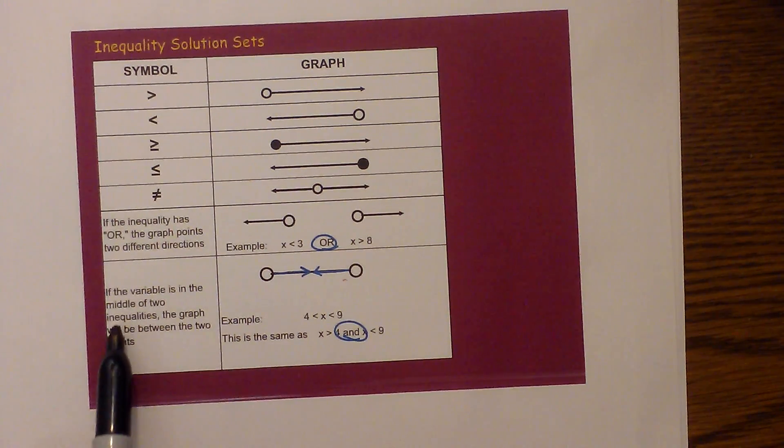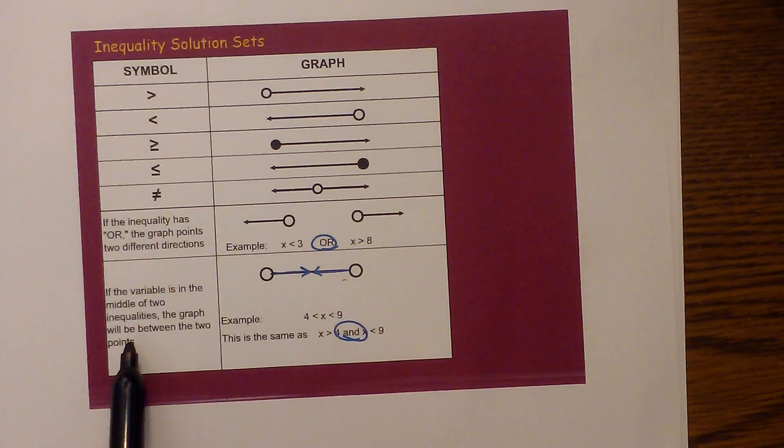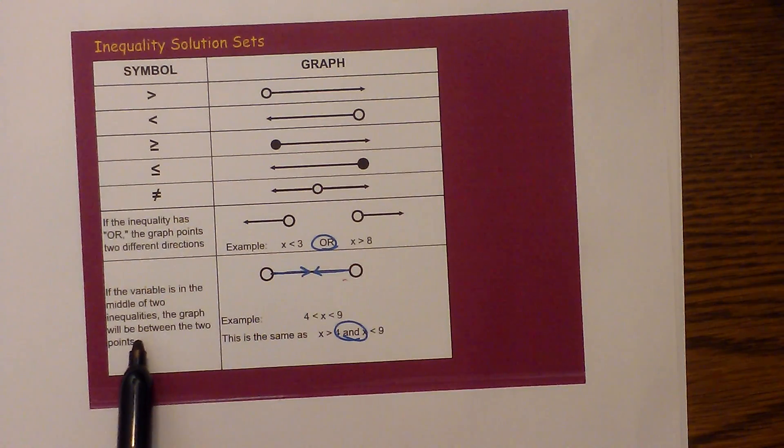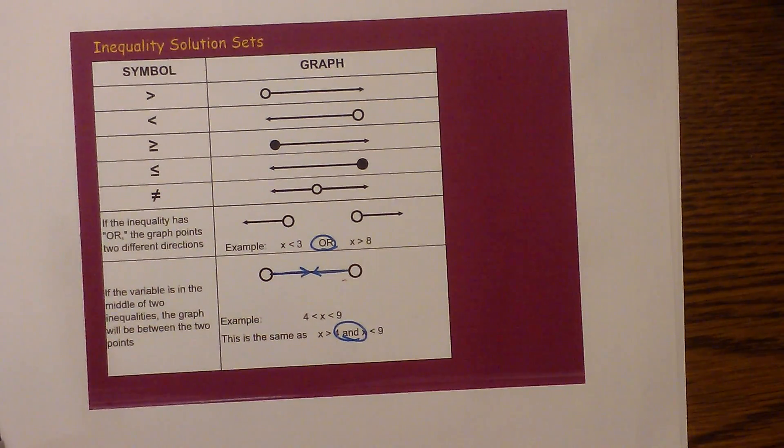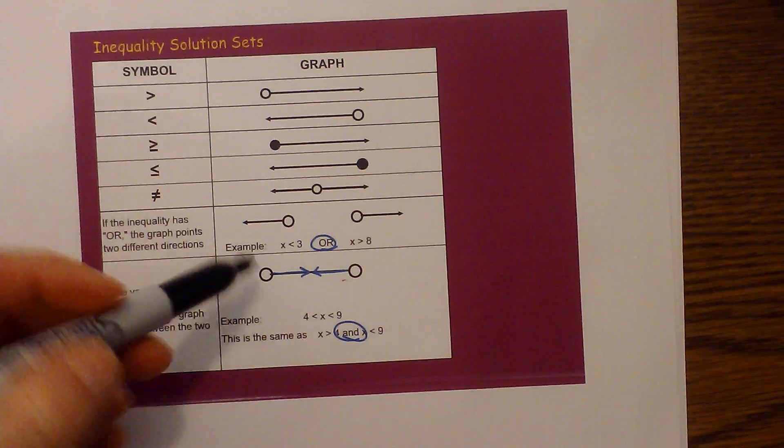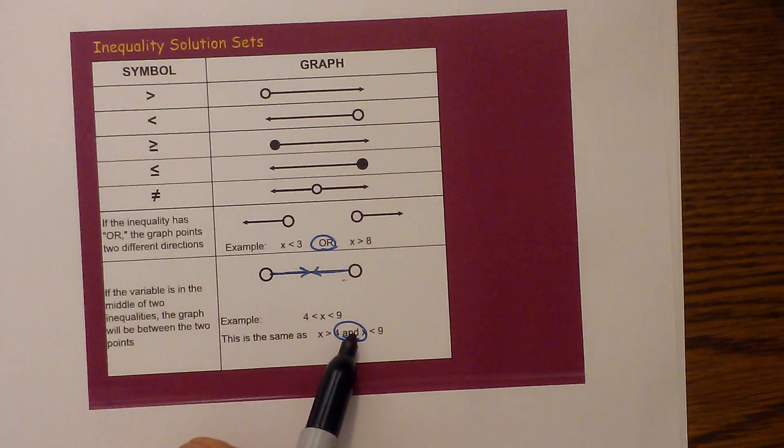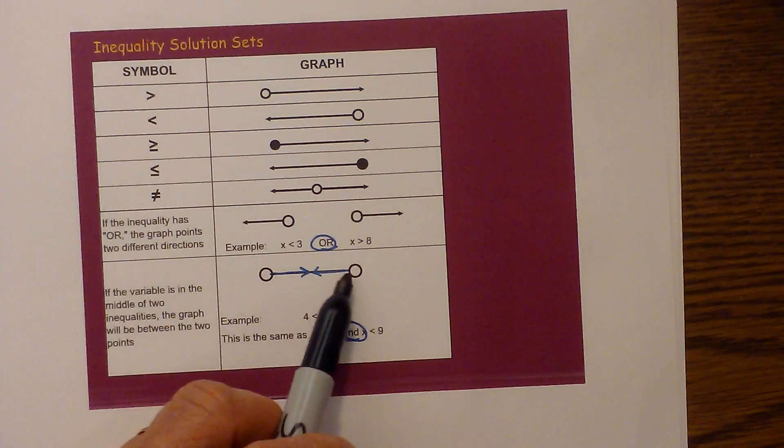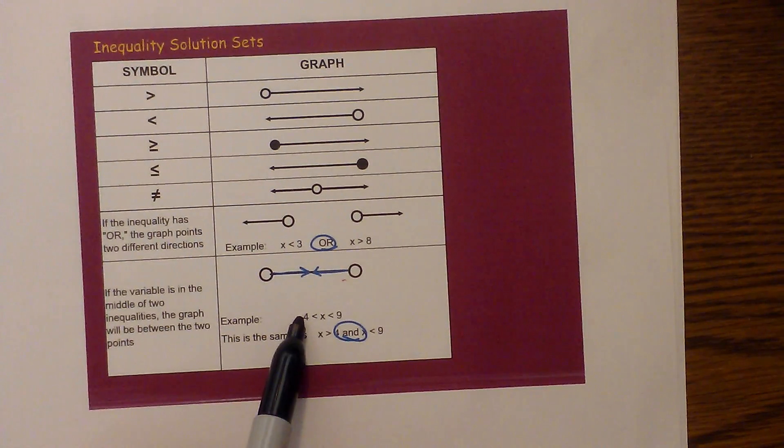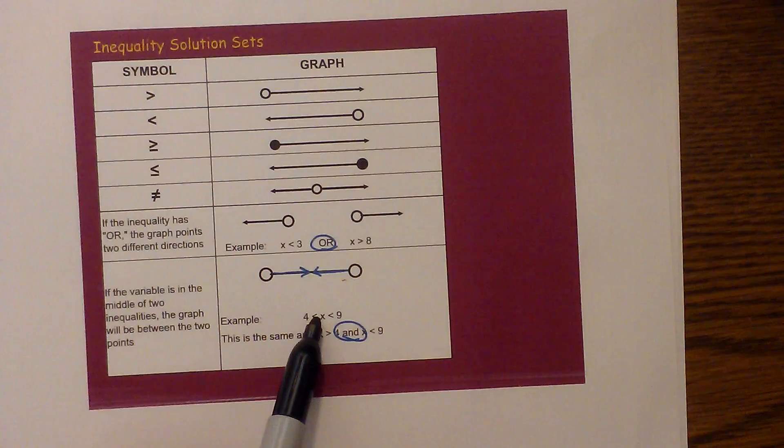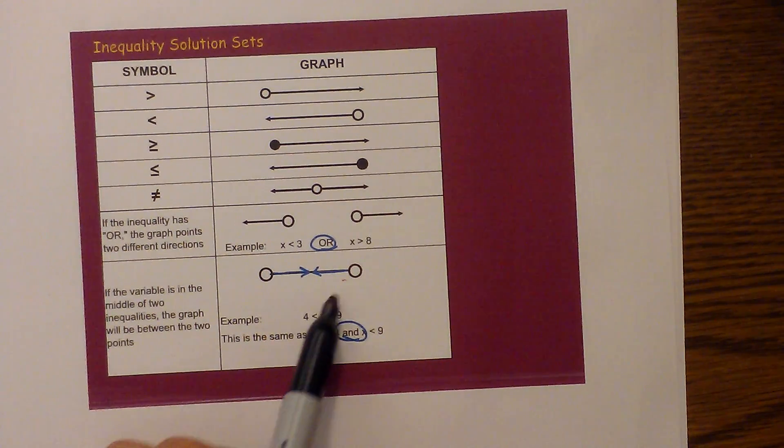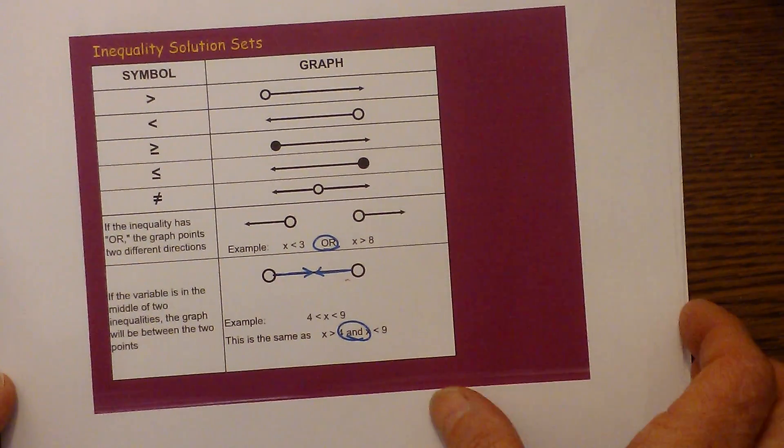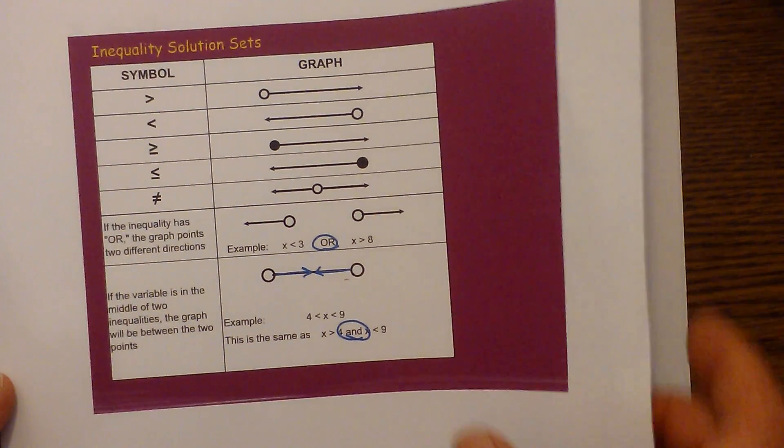Or you may run into where it says AND. If the variable is in the middle of two inequalities the graph will be between the two points. So this would be whenever you use AND, you would have an inequality that looks like this on the number line, 4 is less than x AND less than 9, so that would be the solution.